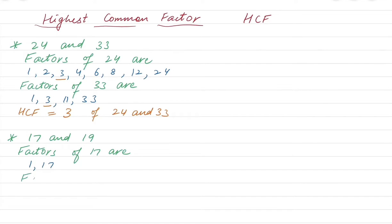Similarly the factors of 19 are... Basically we are finding just two numbers because we know that if we go further we can't get a common one. So 1 and 19. So the common number in these two is 1.